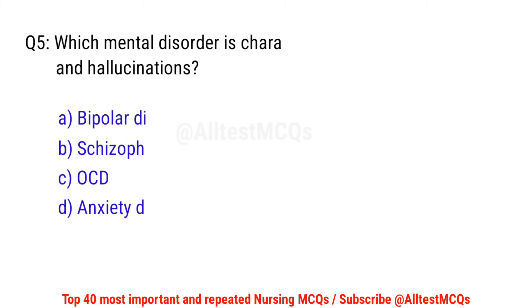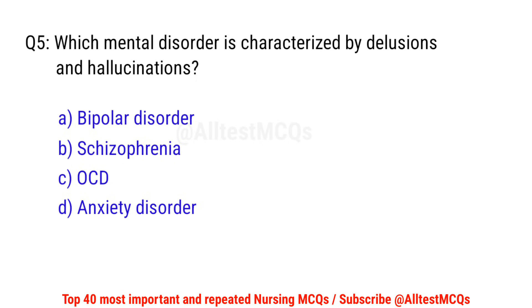Question No. 5: Which mental disorder is characterized by delusion and hallucination? The right option is B: Schizophrenia.